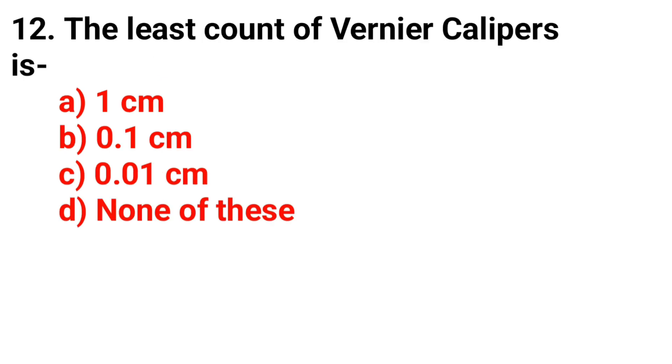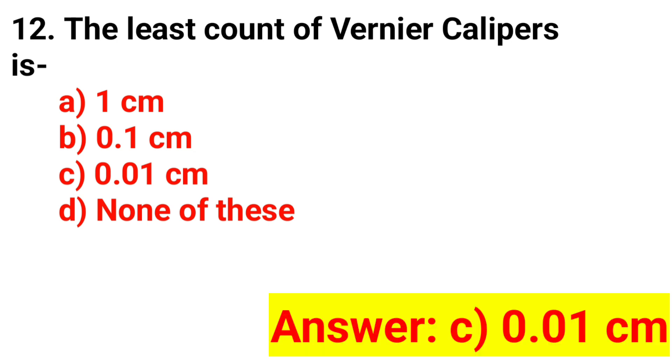Question number 12. The least count of vernier calipers is? The answer is Option C, 0.01 cm.